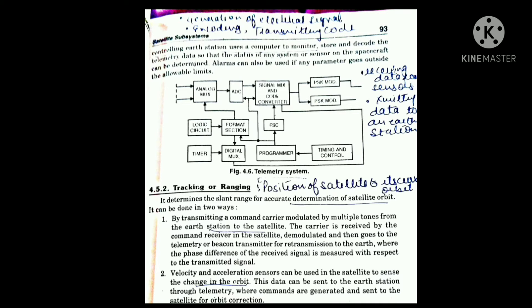There are different types of blocks used in the telemetry system. The first block uses an analog multiplexer (MUX), ADC, signal and mixed code converter, and PSK modulation. The input signal is typically analog and is converted into a digital signal using an analog-to-digital converter. The process involves two steps: first, the analog signal is converted into a discrete signal through sampling; then, the discrete signal is converted into a digital signal through quantization.